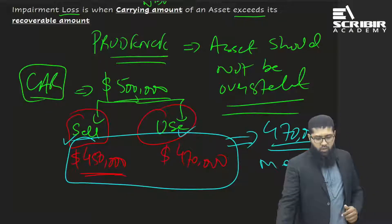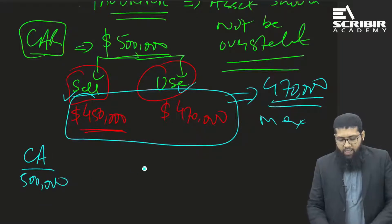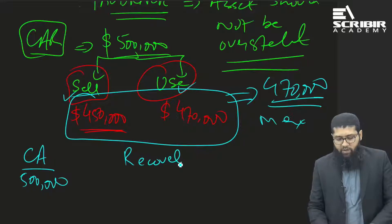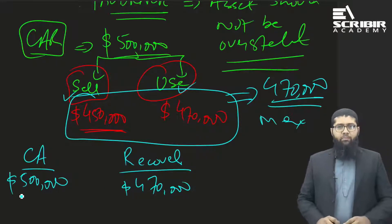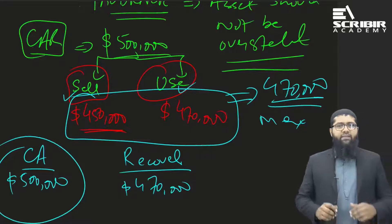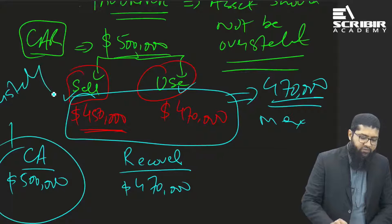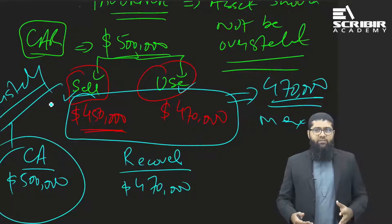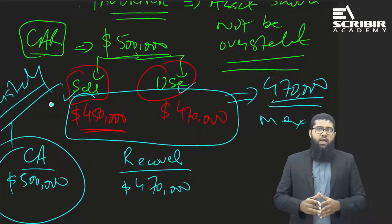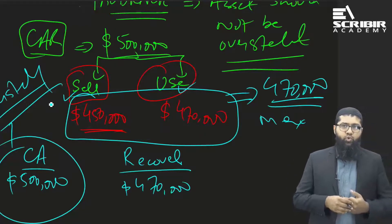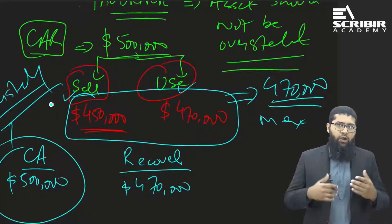This car has a carrying amount of five hundred thousand, but the maximum amount that could be recovered is four hundred and seventy thousand dollars. So if I continue to carry this car at five hundred thousand in my balance sheet, I would be overstating my assets, which is against the principles of prudence. To overcome this, IAS 36 impairment of assets was introduced — its major objective is to ensure that assets are not overstated.